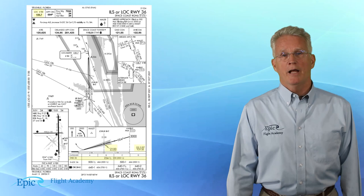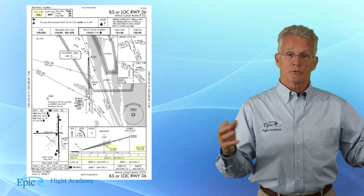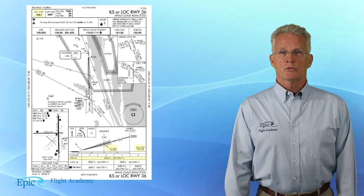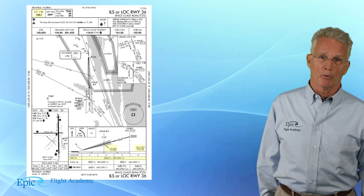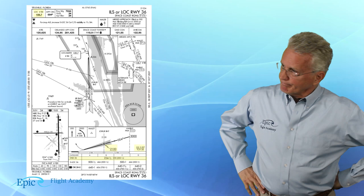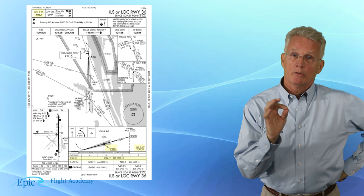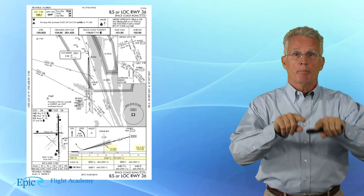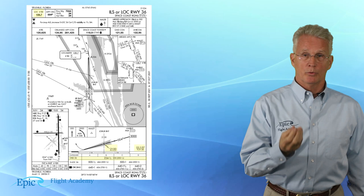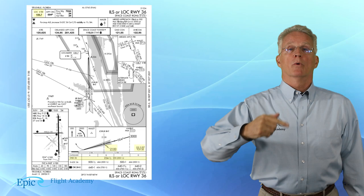That localizer frequency goes into the nav radio, and if there's a glide slope, it's automatically coupled. So if I was going to tune in the ILS 36 here to the Space Coast Regional Airport and I dial in the localizer, do I need to separately dial in the glide slope frequency? No. That glide slope frequency is automatically coupled to that localizer frequency, and the aircraft will receive both glide slope and localizer signals when I dial in that localizer frequency.